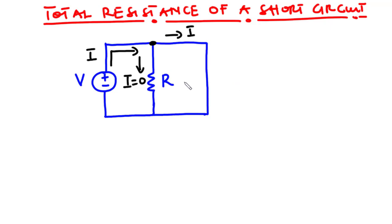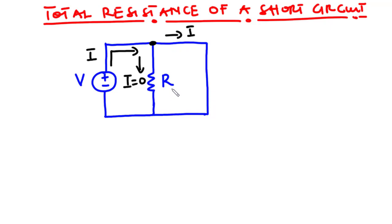Another way to identify whether a resistor has been short-circuited is to consider the loop where the resistor is found. If you can go through that loop without passing through any other circuit element except the resistor, then the resistor has been short-circuited. So there are two approaches: the current distribution method — where very little or no current flows through the resistor because current prefers the least resistant path — and the loop approach, where you check if you can traverse a loop containing only that resistor.